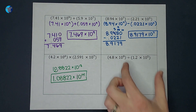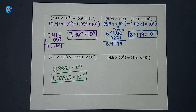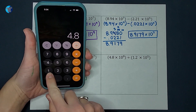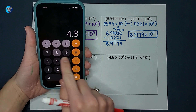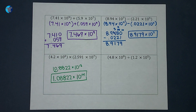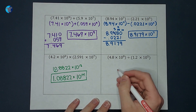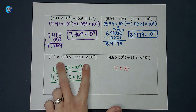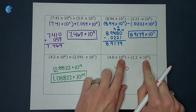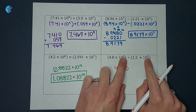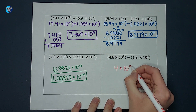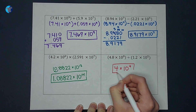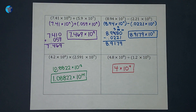For division, the exponents do not have to match. I'll use my calculator: 4.8 divided by 1.2 equals 4. For the exponents, similar to multiplication, when dividing two numbers with the same base I subtract the exponents. So 9 minus 5 gives me 4. This ends up being 4 times 10 to the fourth. There's really a decimal there but we don't have to write it — so four times 10 to the fourth.